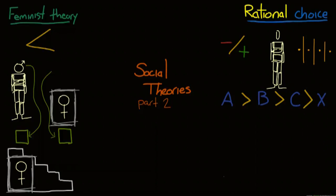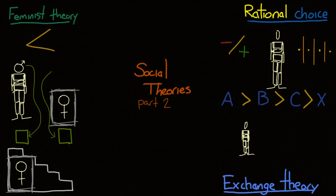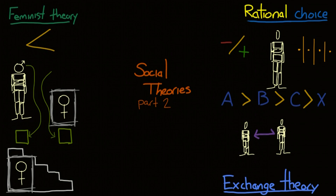All of this adds up to explain how people choose the best possible option for themselves out of the available selections. Exchange theory is the application of rational choice theory to social interaction. It is used to study family relationships, work relationships, partner selection, parenting, and many other interpersonal interactions.